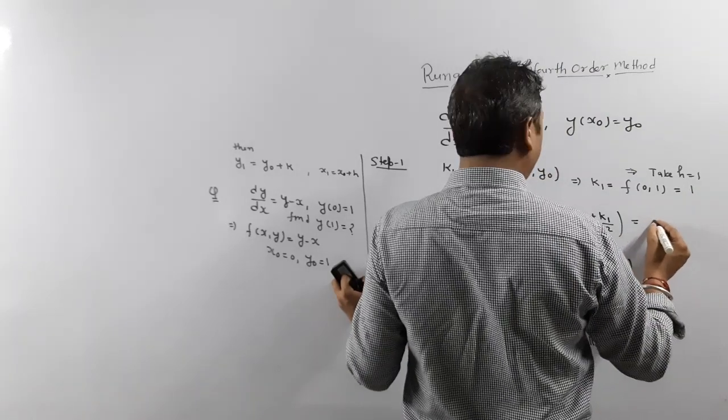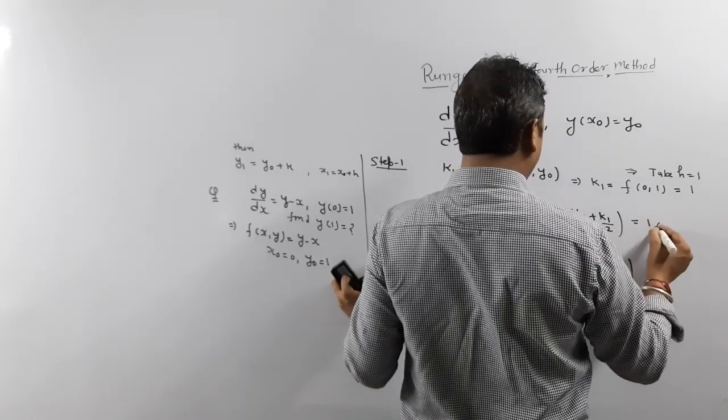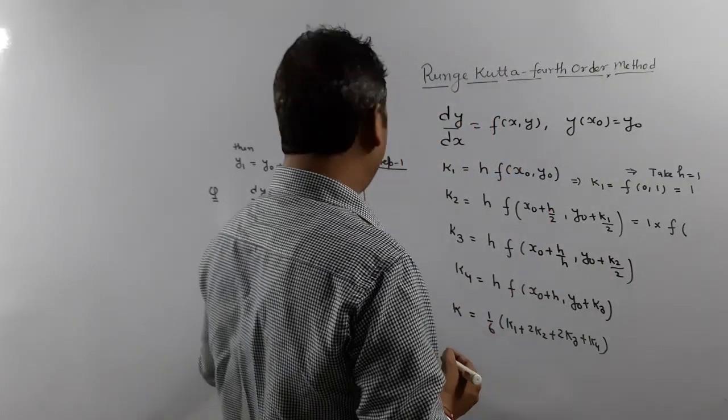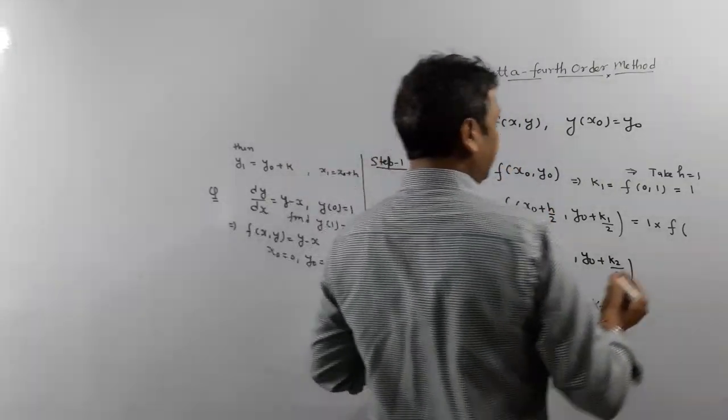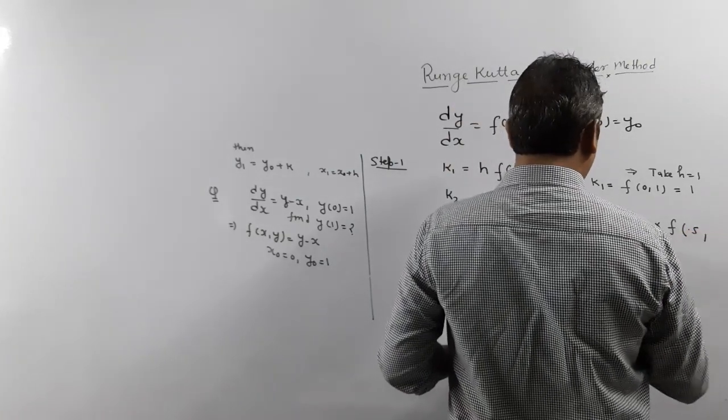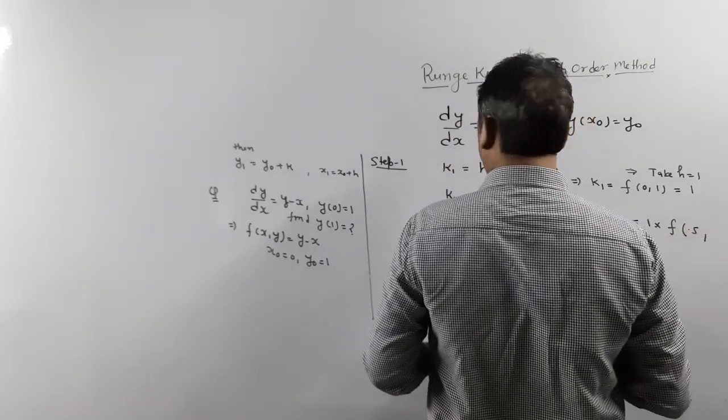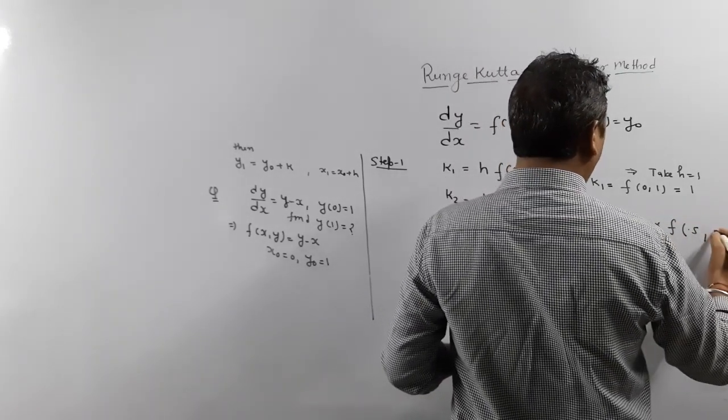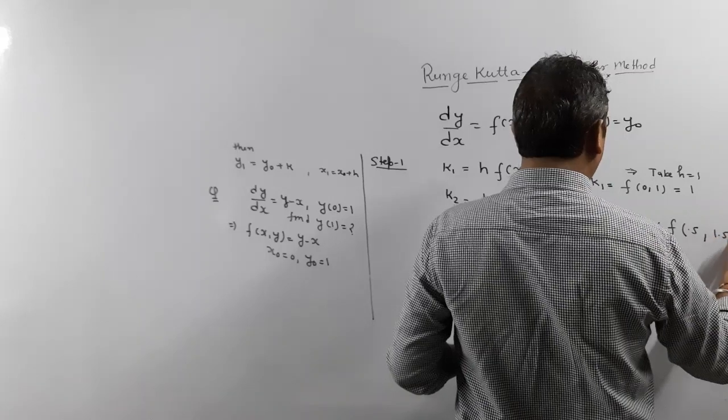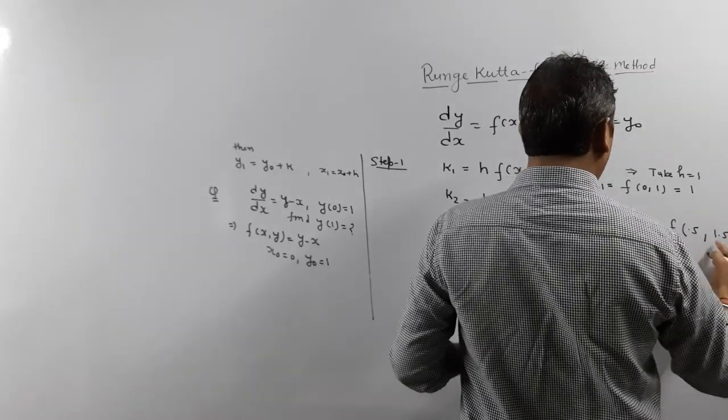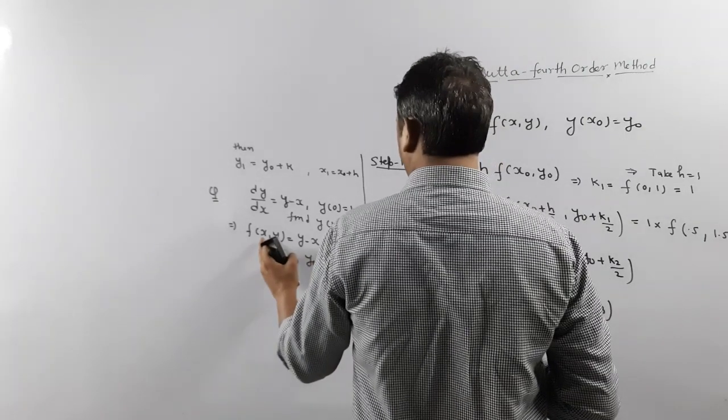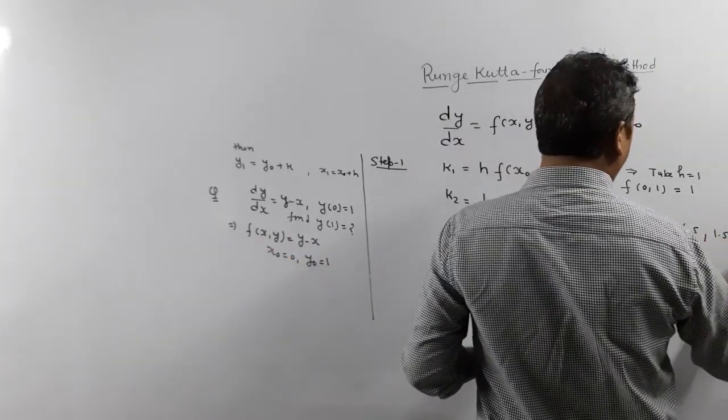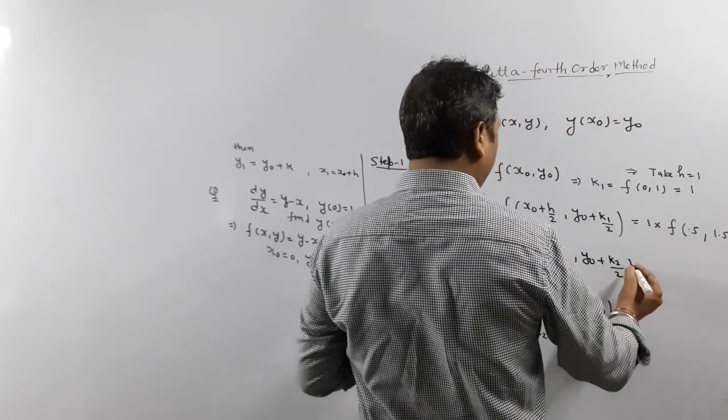What is K2? K2 is H, H means 1. Function at x0 plus h/2. What is x0? 0. H is 1, so it means 0.5. f at y0, y0 is 1, plus K1/2. Means y0 1 plus 0.5 means 1.5. What is the value? 1.5 minus 0.5. Because f(x,y) is given y minus x. So 1.5 minus 0.5 means 1. So k2 is 1.